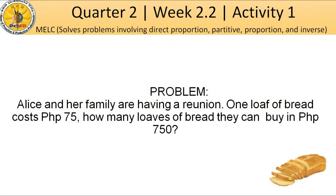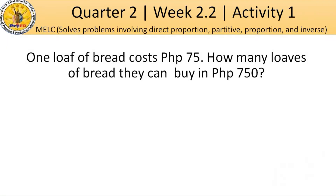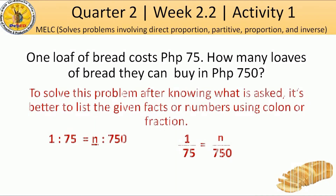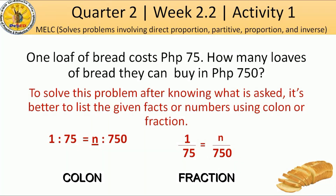After reading the problem and knowing what is being asked, let's move on on how to solve for this. To solve this problem, after knowing what is asked, it's better to list the given facts or numbers using colon or fraction. Let n represent the missing term. So we have this proportion: 1 is to 75 as n is to 750.